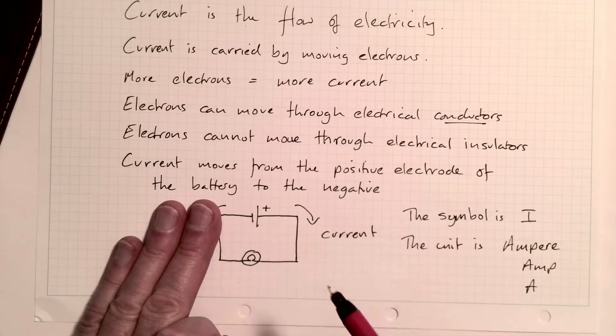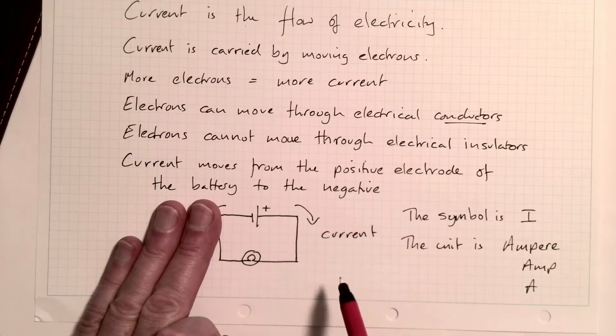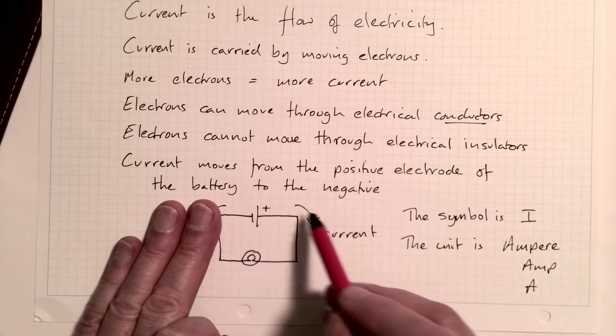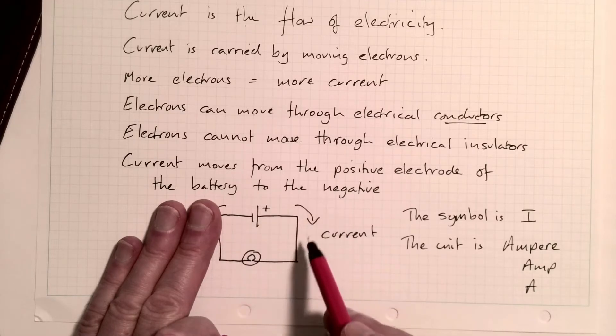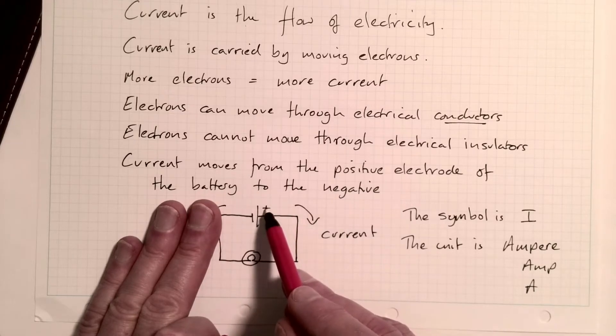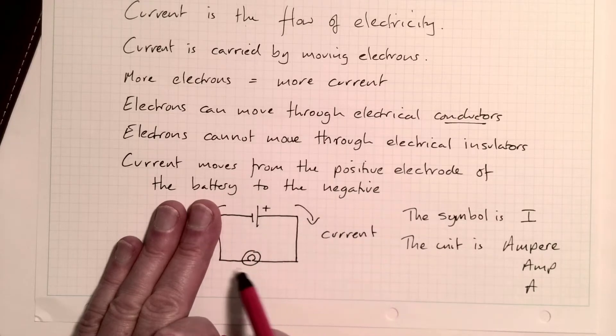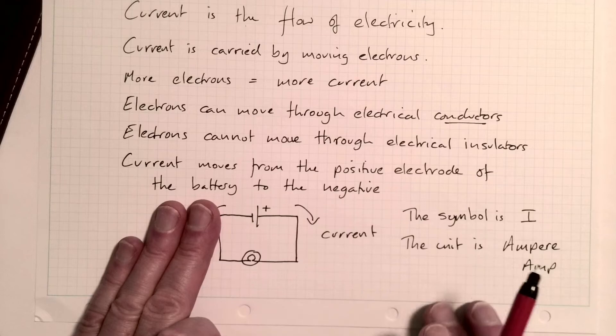Or possibly some higher-end physics. But this we are going to worry about: current will be a positive value if it's moving from the positive to the negative.